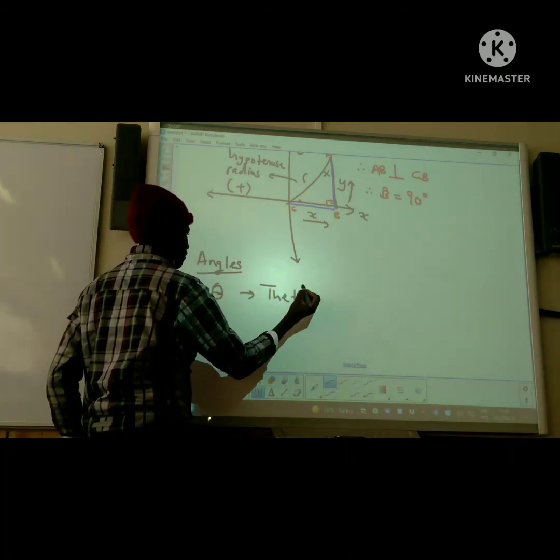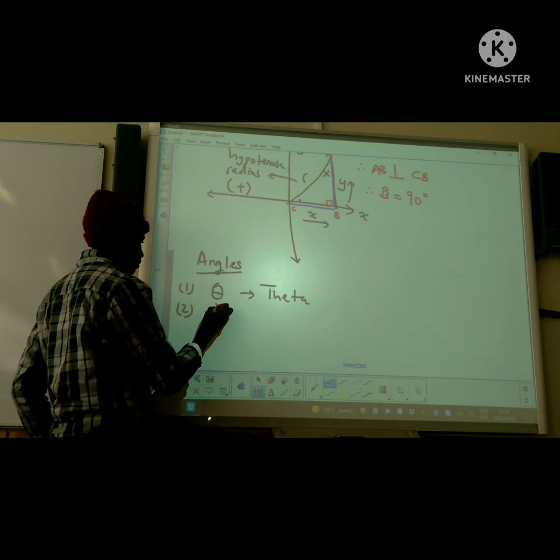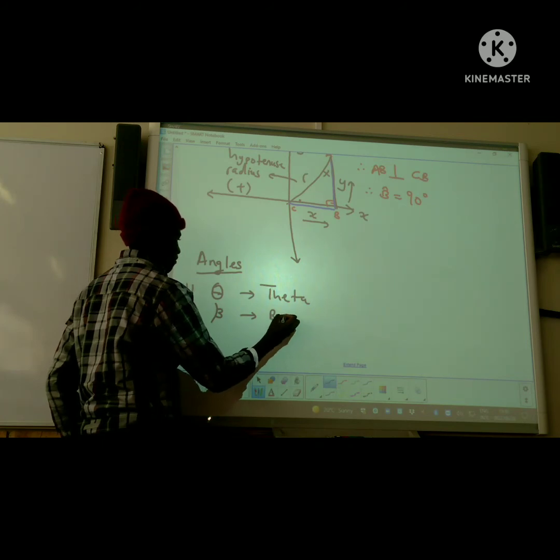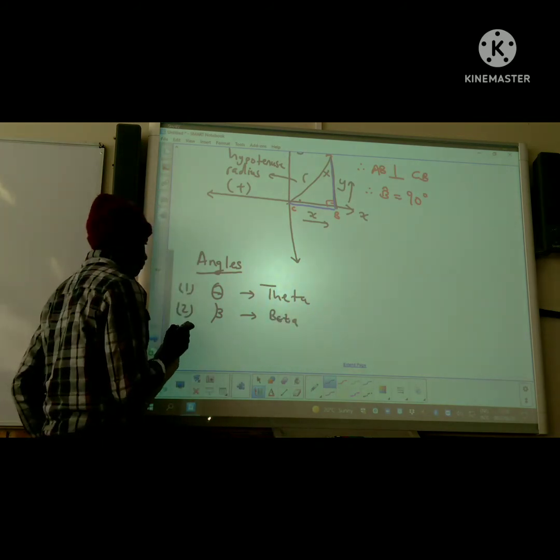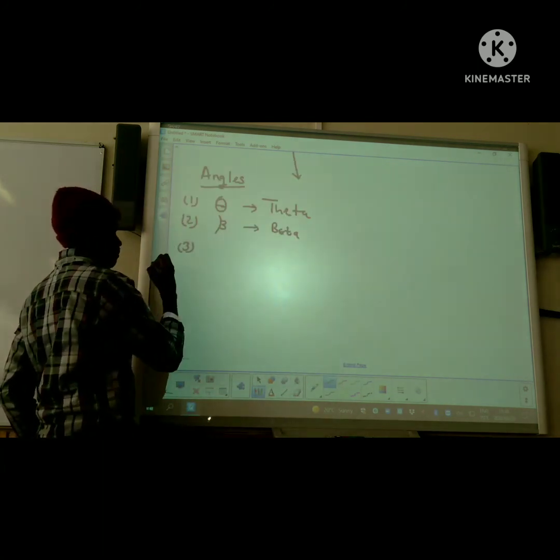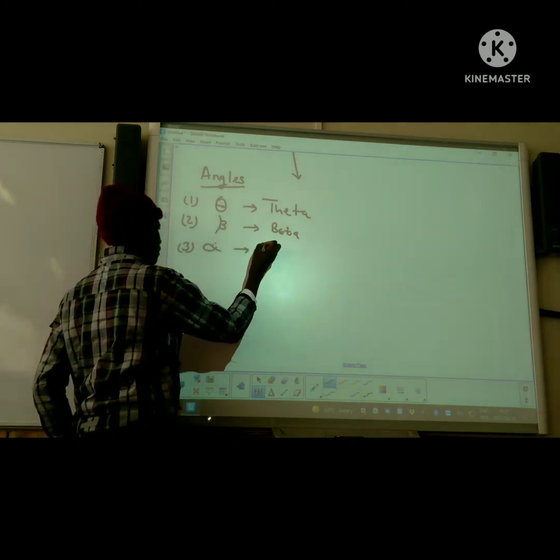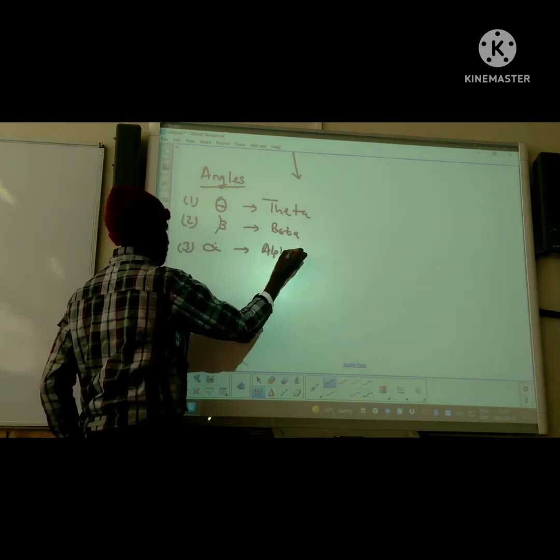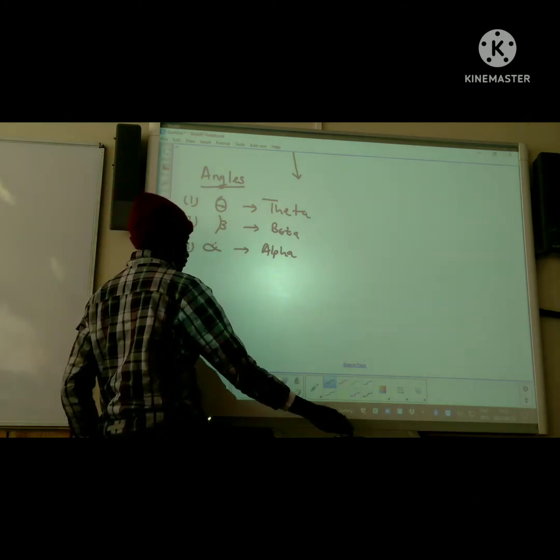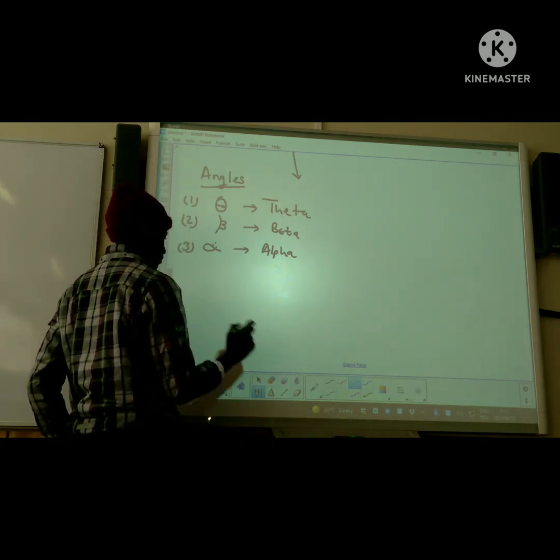Number one, we've got theta. That is the symbol for theta. Theta is used to represent an angle. Then we've got beta. Beta is also another sign used to represent an unknown angle. We've got the third sign, which is alpha. We use these to represent certain angles, unknown angles. Thank you guys for watching. That is basic information on a right-angled triangle which we use to apply trigonometry.